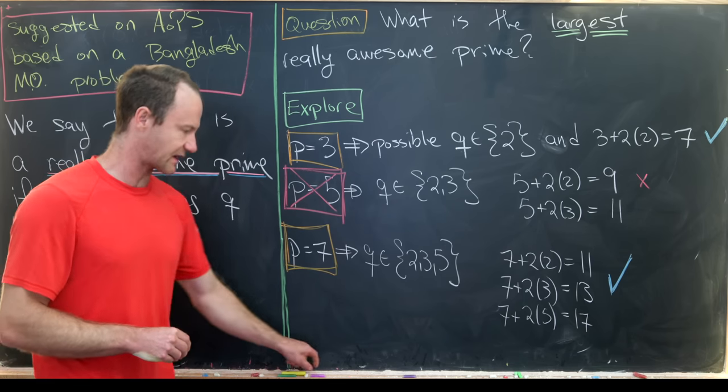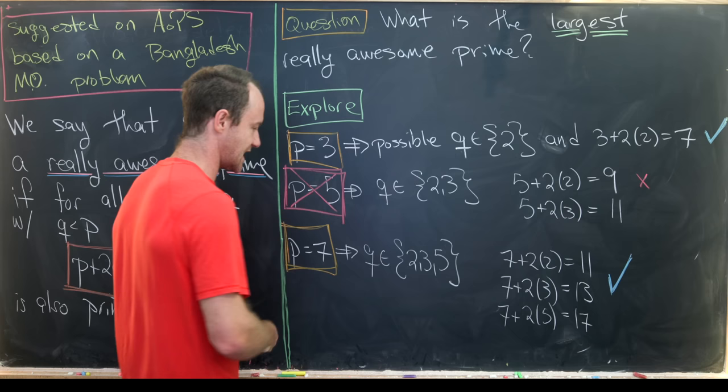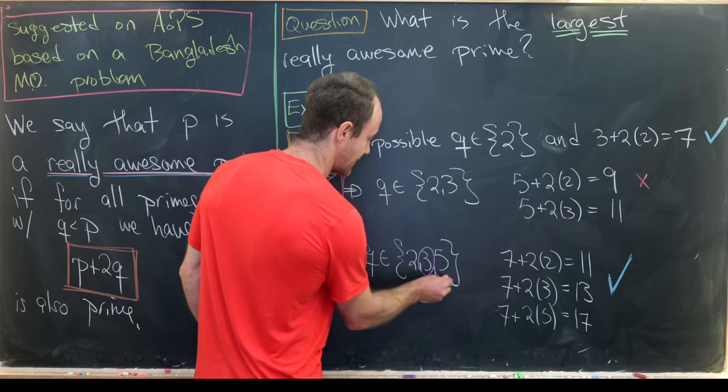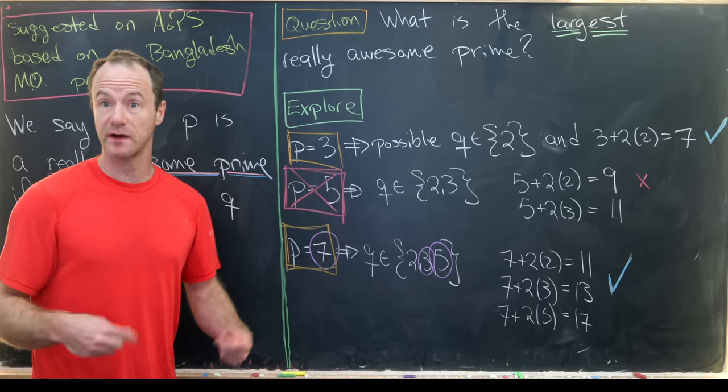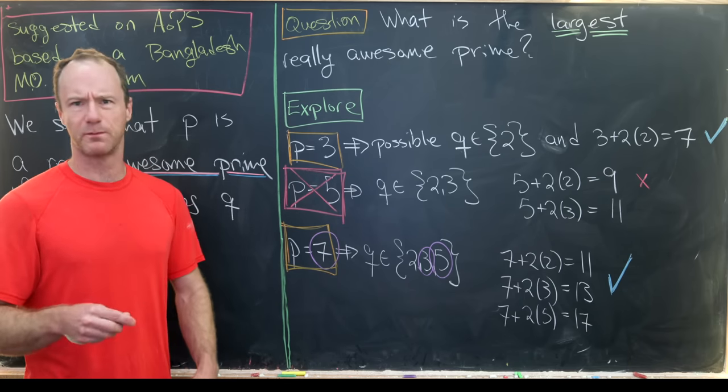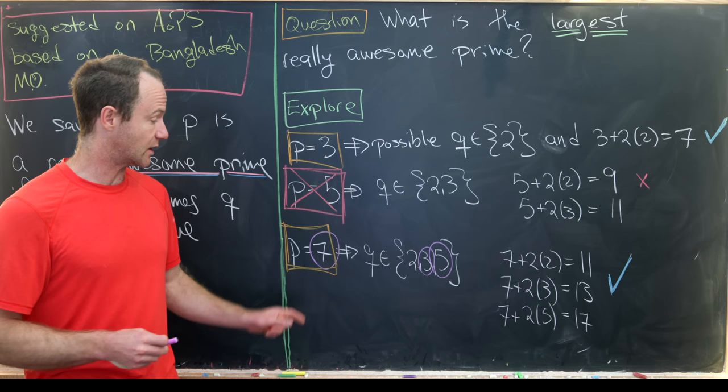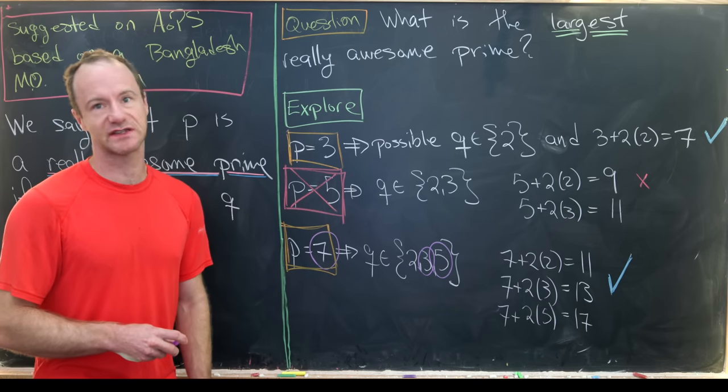Now another thing that I'd like to point out is that the primes 3, 5, and 7 are the only triples of primes, or prime triplets, if you will.